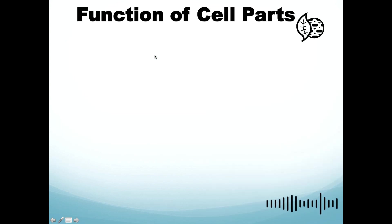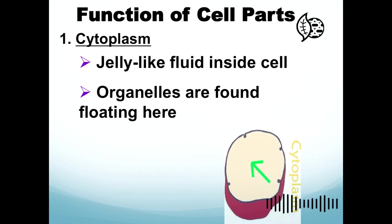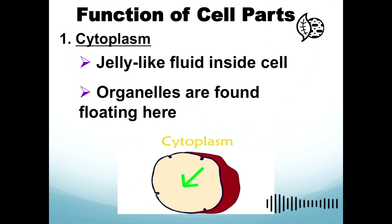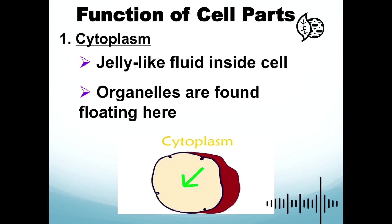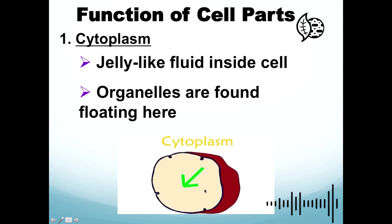Let's start with the first organelle: the cytoplasm. The cytoplasm contains a jelly-like fluid inside the cell where the organelles are found floating. It is semi-fluid, enclosed within the plasma membrane, and consists of fluid cytosol, organelles, and other structures. The cytoplasm is located inside the cell.